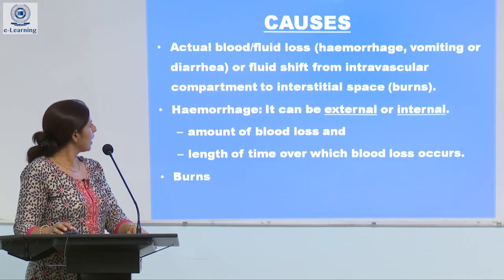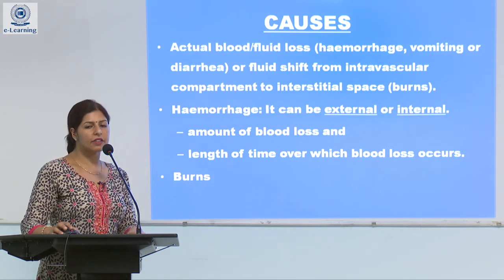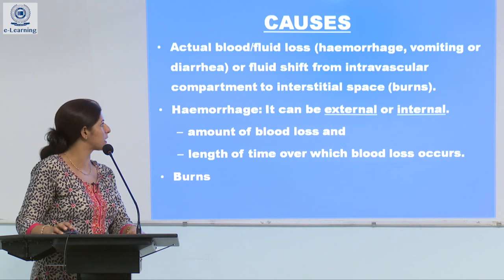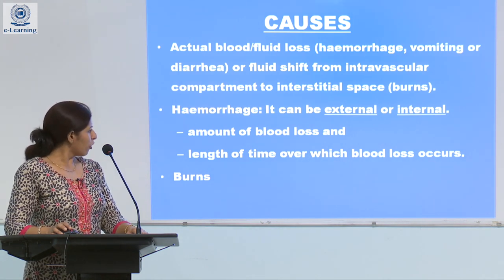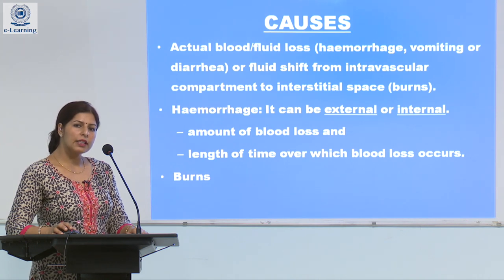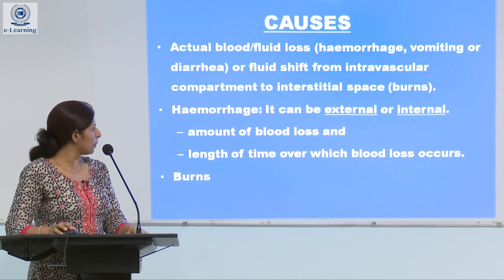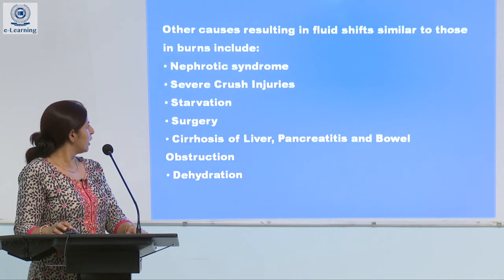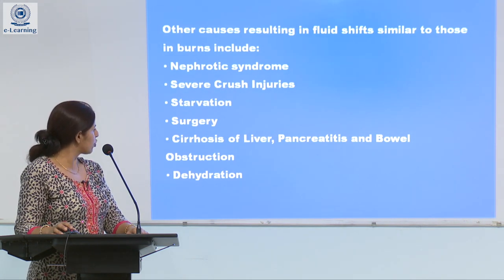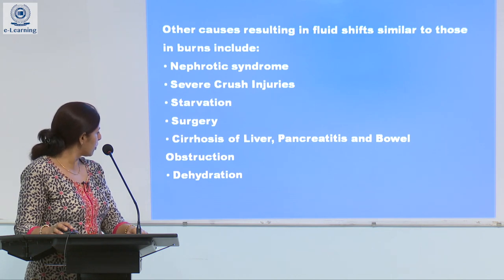The causes of hypovolemic shock are actual blood or fluid loss, which may result from hemorrhage, vomiting, or diarrhea. Or a fluid shift, where fluid does not leave the body but leaves the intravascular compartment and shifts to the interstitial space. This shift may occur in burns. Hemorrhage can be external or internal, and the amount of blood loss and the length of time over which it has occurred will decide the fate of a person going into hypovolemic shock. Other causes include nephrotic syndrome, severe crush injuries, starvation, surgery, cirrhosis of liver, pancreatitis resulting in ascites, bowel obstruction, and dehydration.